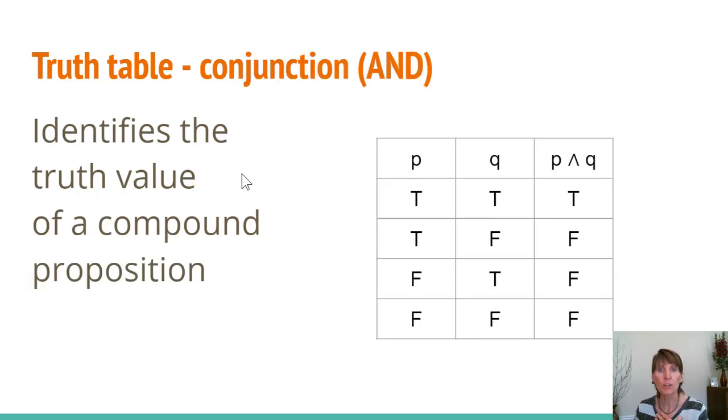Here's the truth table for conjunction, which is AND. If we're using two variables, P and Q are the two variables, and then we look at what it means when we use the AND operator or the conjunction operator with them. If P is true and Q is true, then P and Q is true. When P is true and Q is false, then P and Q is false. When P is false and Q is true, then P and Q is false. And when they're both false, then P and Q is false. This is always the case - whenever we use that conjunction operator, this is the result. This is well-defined, unambiguous.